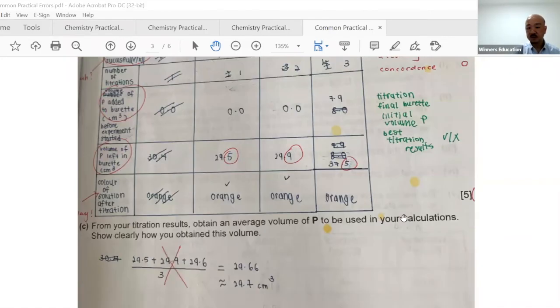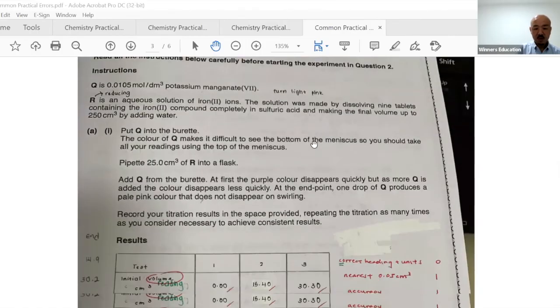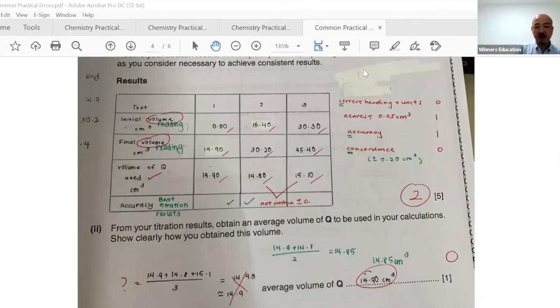Do you see - one, two, three? Don't know how to calculate average value for titration. You don't use three values. Again, cannot write 'volume' - it's called 'reading.' Three marks gone. Never followed instructions, never said 'best titration result,' and skipped formatting requirements.